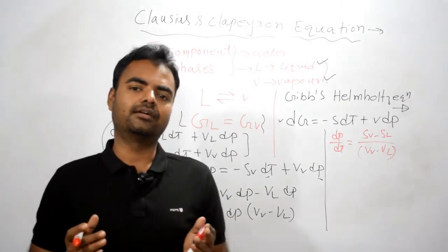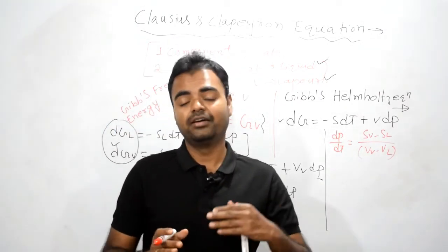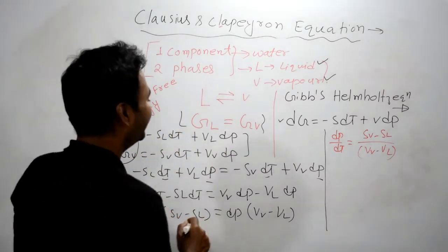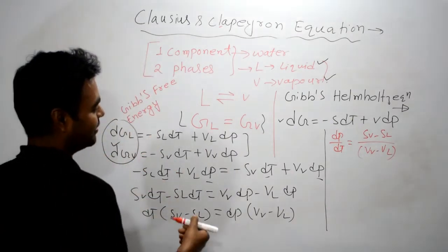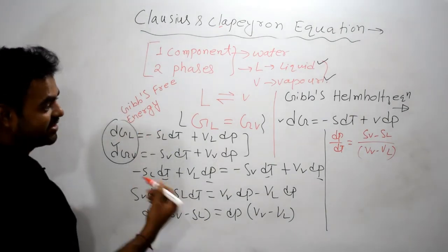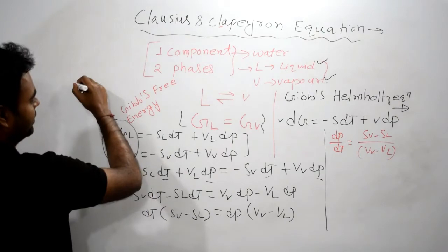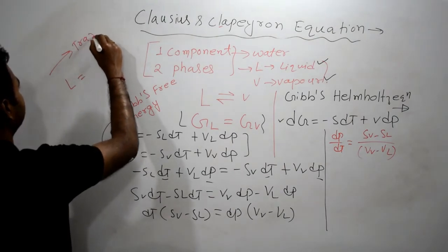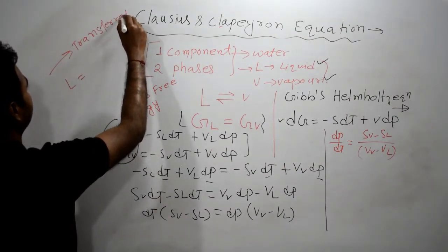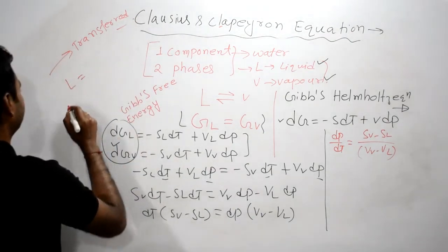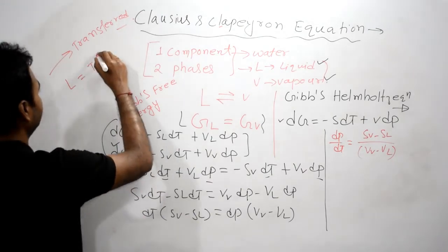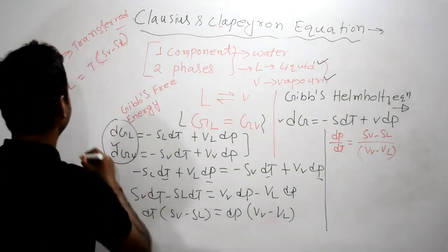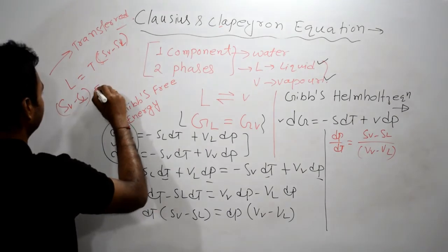We know in case of reversible phase transition process that latent heat, if we transfer heat per mole or per kg, L equals T(SV minus SL). Therefore what we can write: SV minus SL equals L upon T.